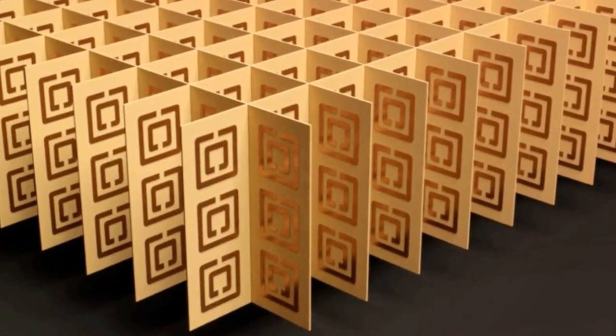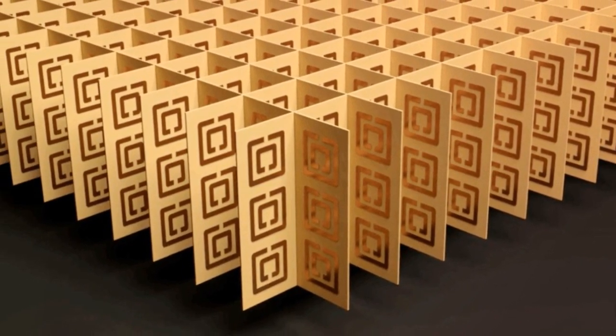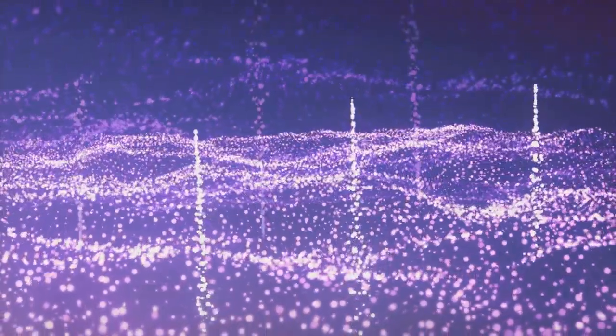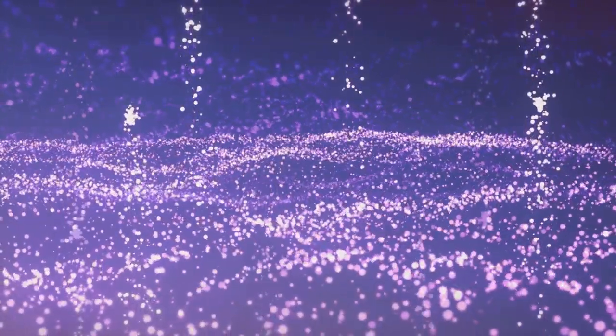Now, you might be wondering, what makes these materials so meta? The answer lies in their structure. Metamaterials are designed at a microscopic level, with structures that allow them to manipulate electromagnetic waves in ways that were once the stuff of science fiction. These materials are not defined by the substances from which they are made, but rather, the way those substances are arranged.